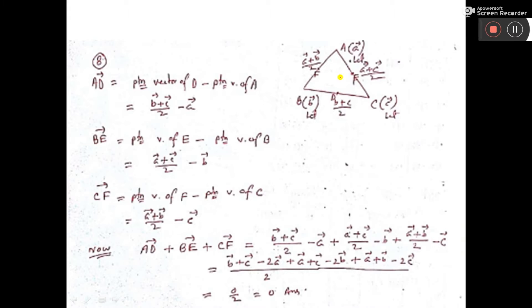In the diagram I have drawn, I consider triangle ABC. The position vector of A is small a, the position vector of B is small b, and the position vector of C is small c.